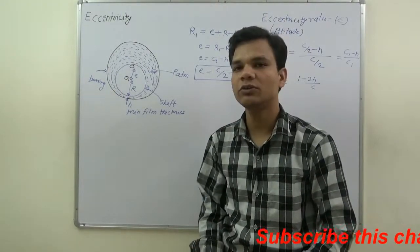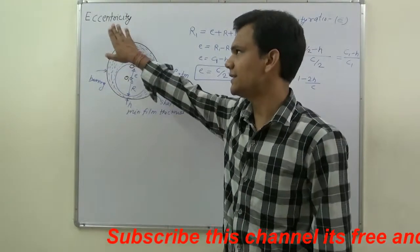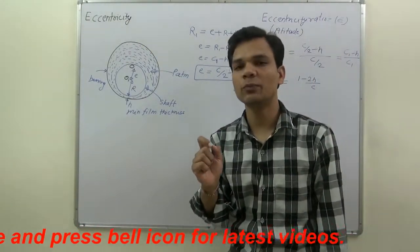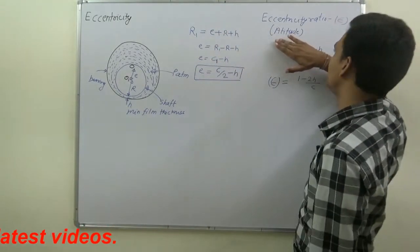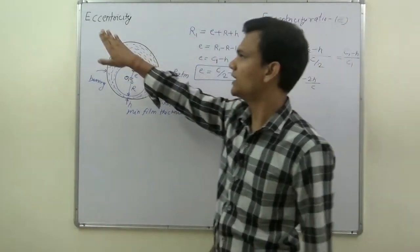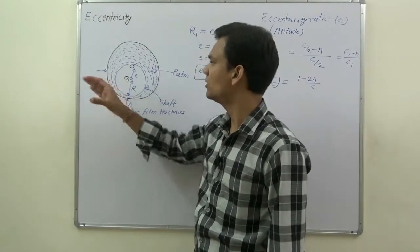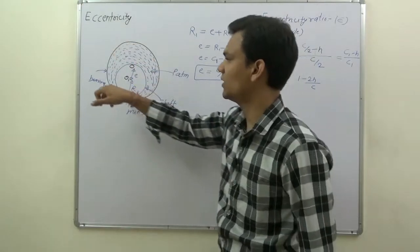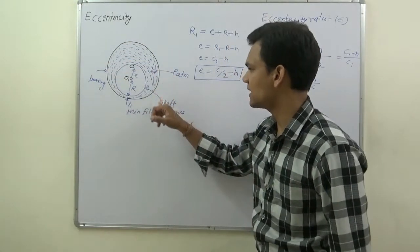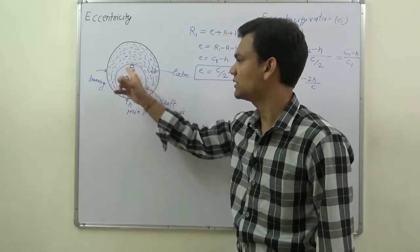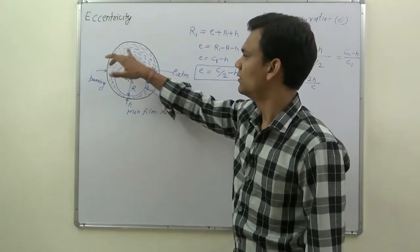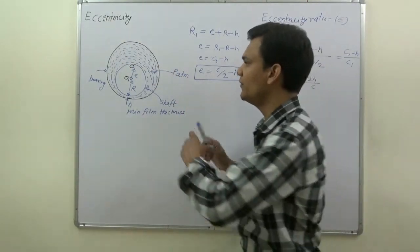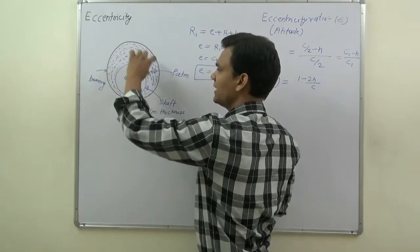Today we are going to discuss eccentricity and eccentricity ratio. The another name of eccentricity ratio is attitude. To understand eccentricity, I draw a figure for a bearing. The outer periphery is showing the bearing and the inner periphery is showing the shaft. PATM is the pressure of the lubricant, and we fill initially the lubricant at atmospheric condition.